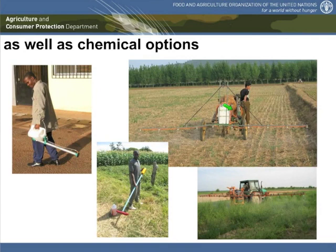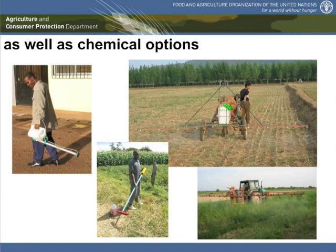Obviously we can also use chemicals, and in conservation agriculture we would use similar equipment as in conventional agriculture — mostly spraying equipment, boom sprayers for field crops. But preferably we would choose equipment that allows a lower application rate, like rotary nozzle applicators with reduced volume, or wipe-on wick type applicators, which can apply the product directly to the weed without getting any product on the soil or into the environment.